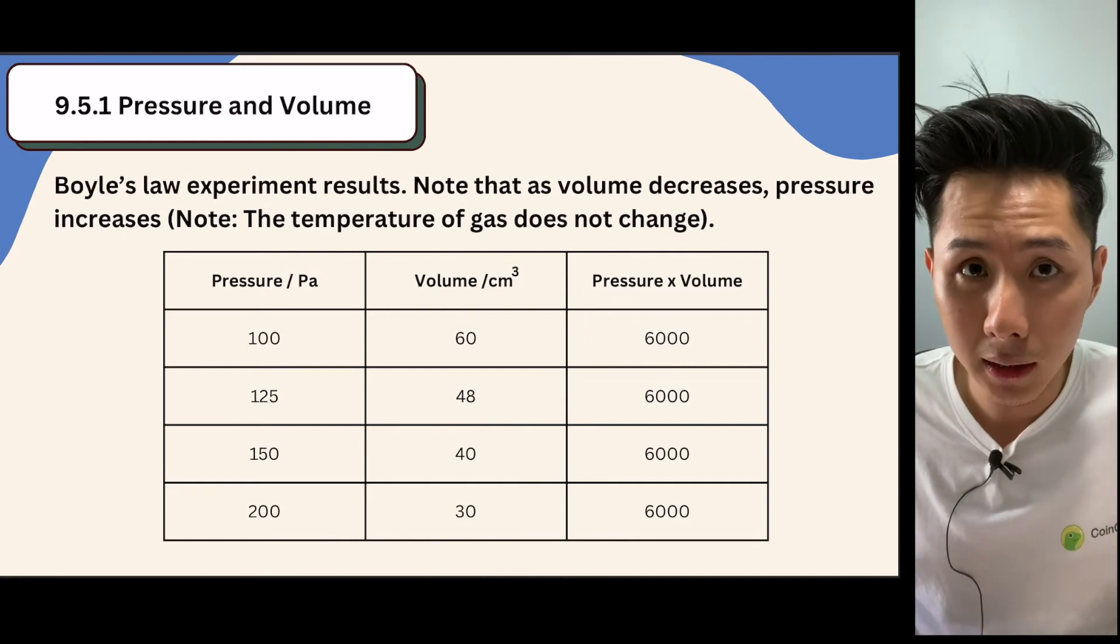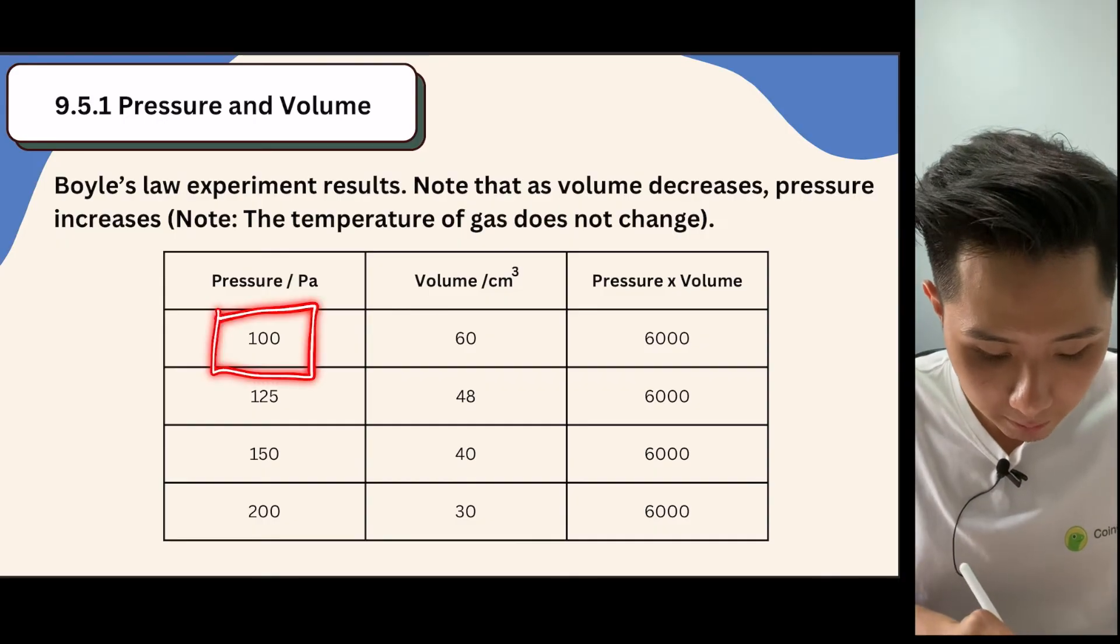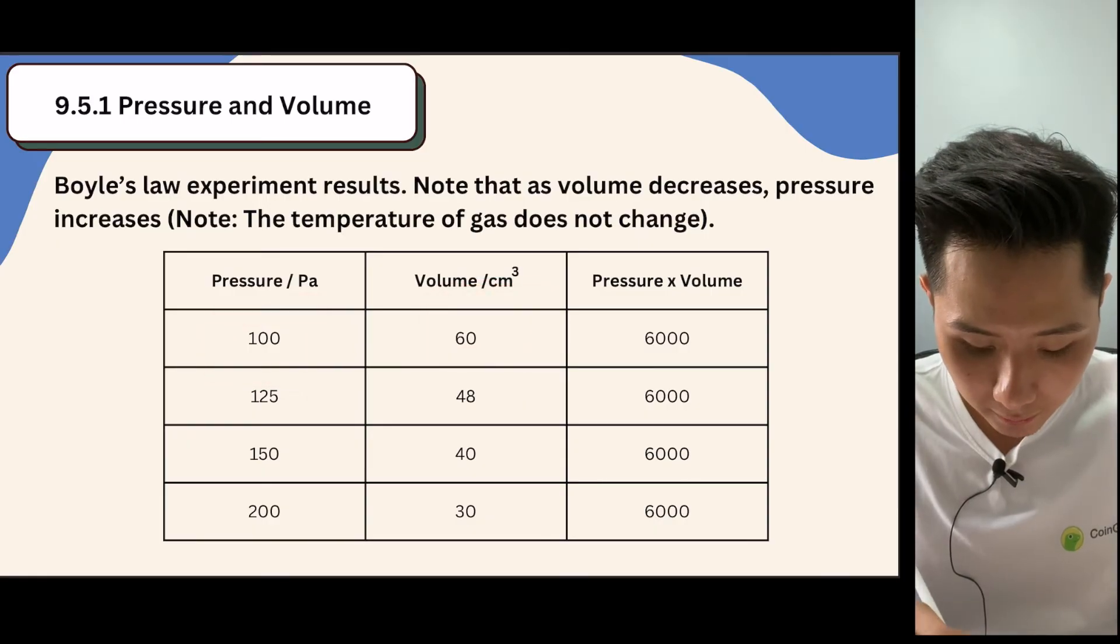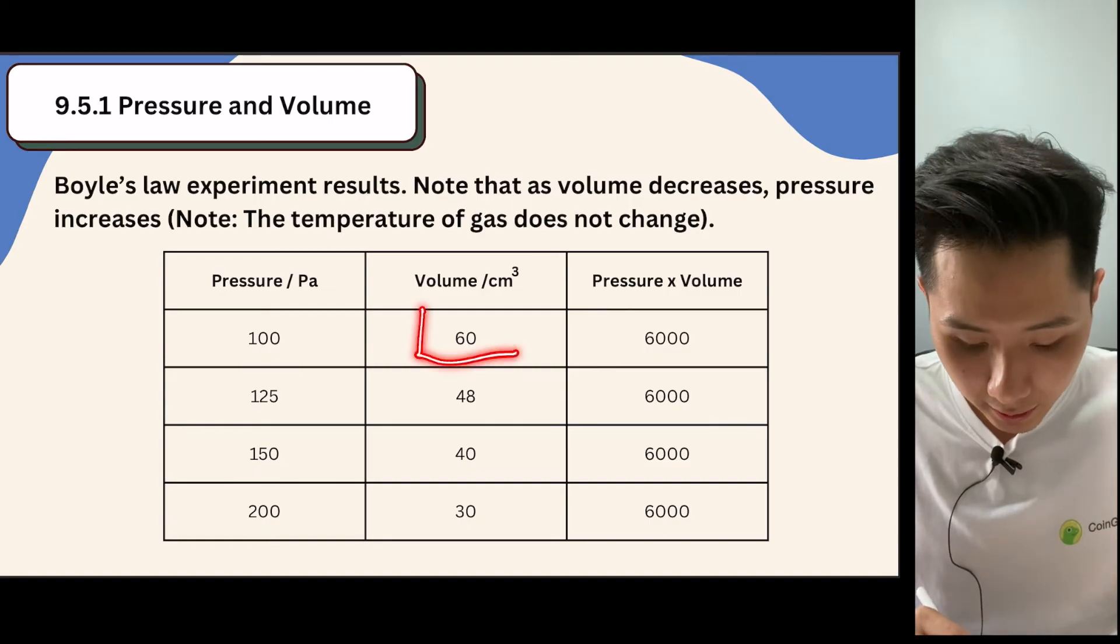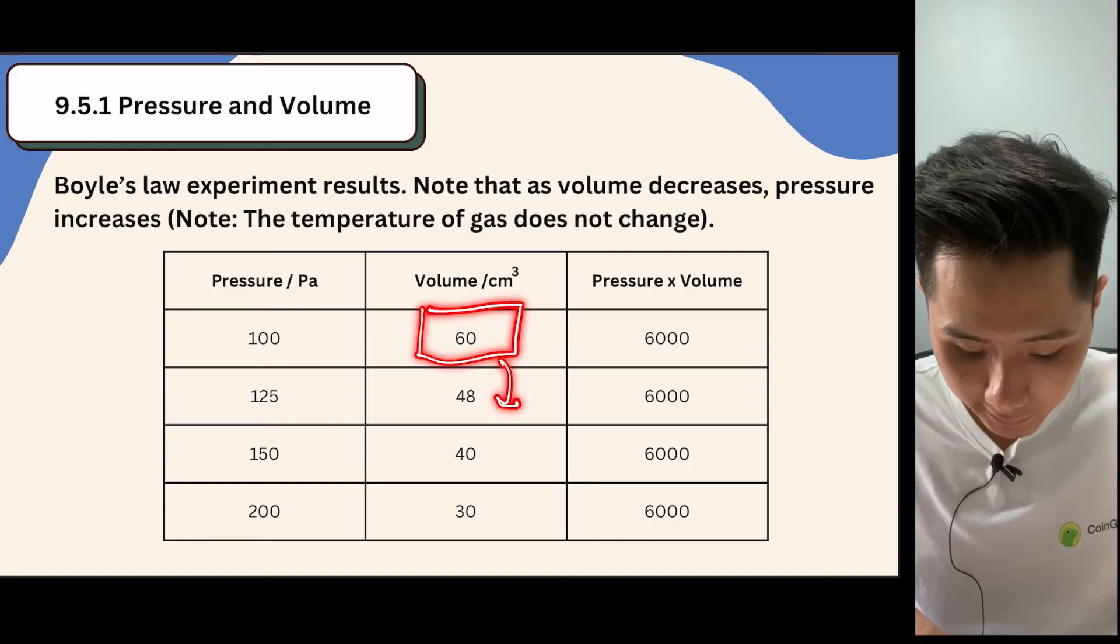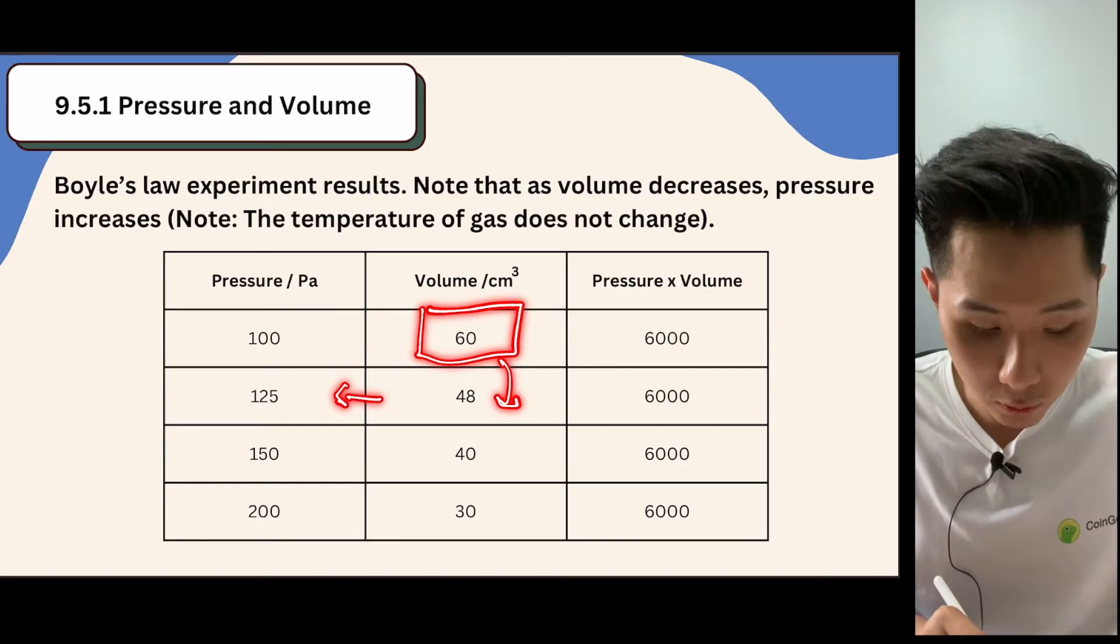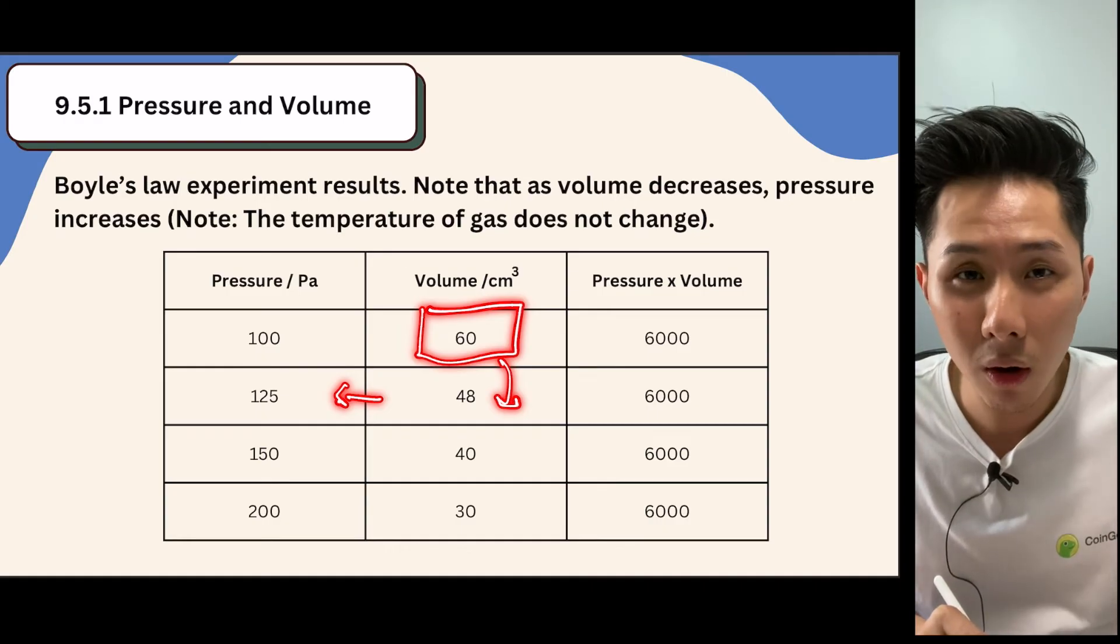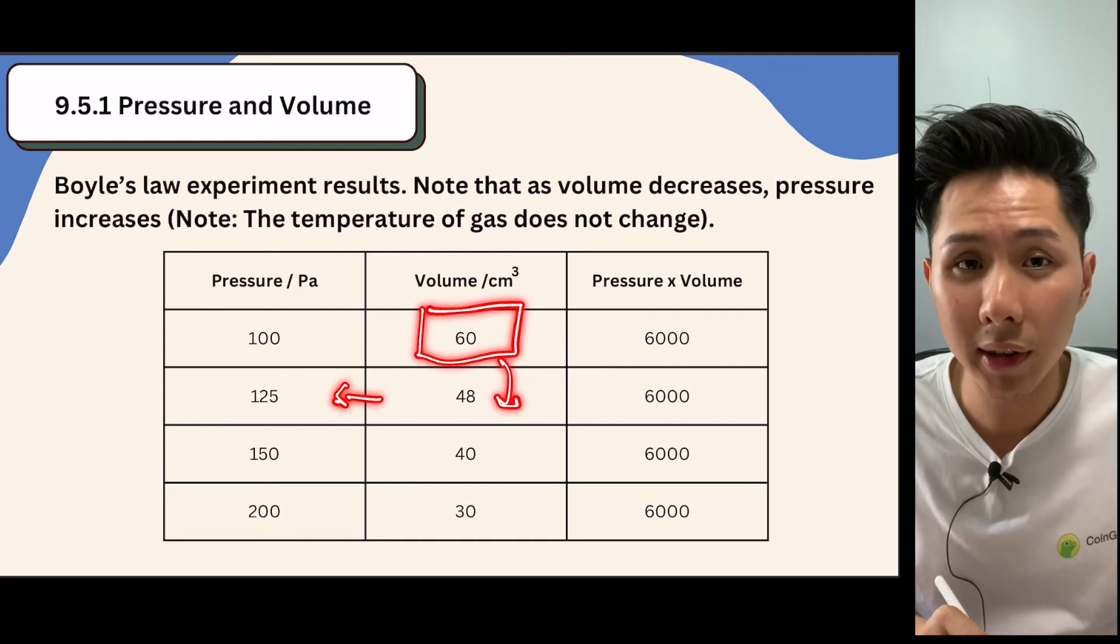So this is data collected from a Boyle's Law experiment. So what they do is that they try to manipulate the pressure or the volume, and then see how each relate to another. For instance, you could change the volume of the gas particle from 60 to 48, and you will have seen that the pressure increases. And this is because the lower the volume of the container, the more frequently the air particles collide with the wall, resulting in higher pressure.